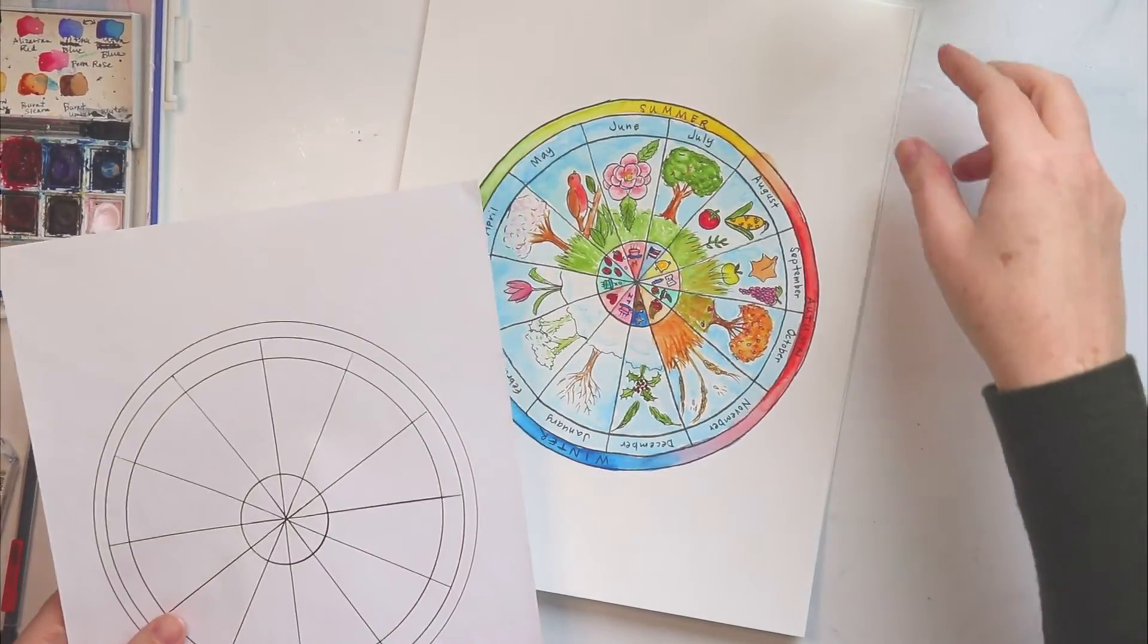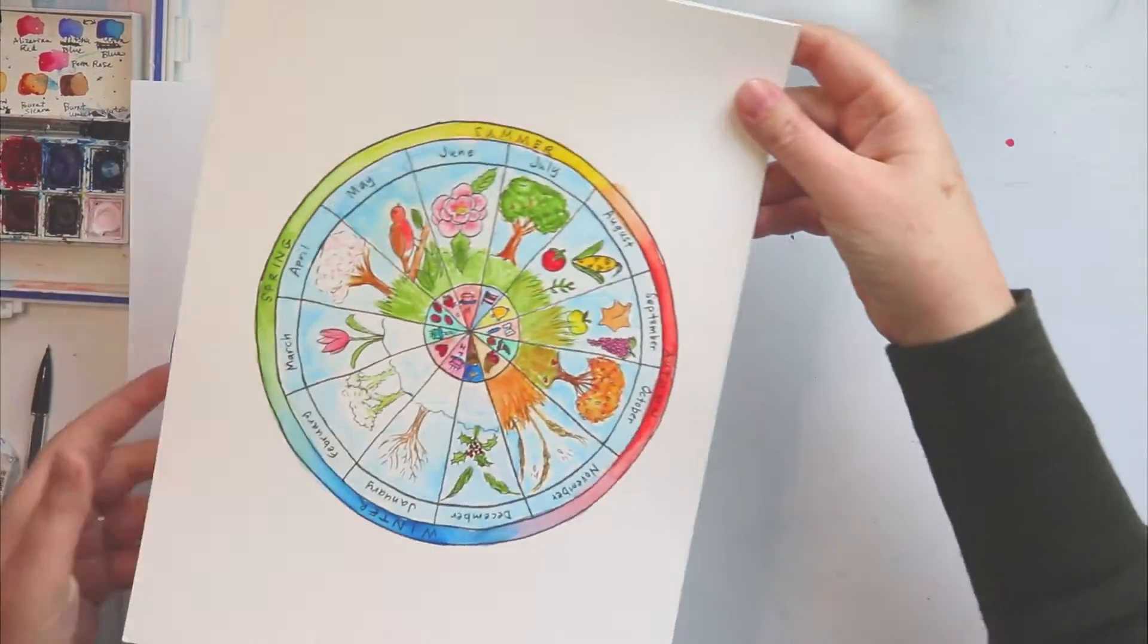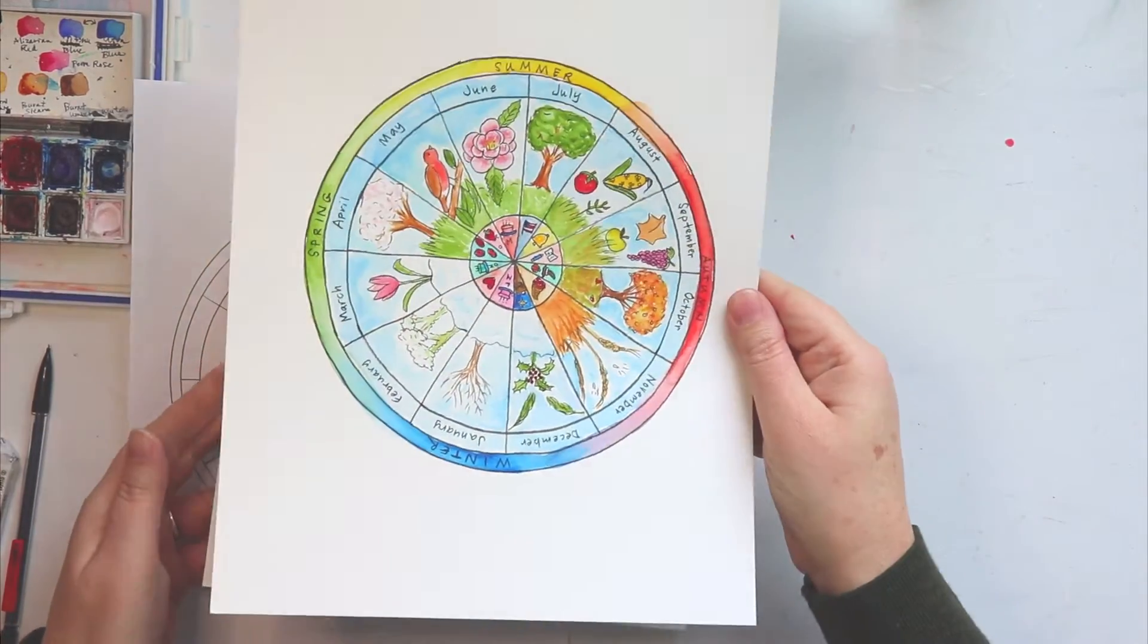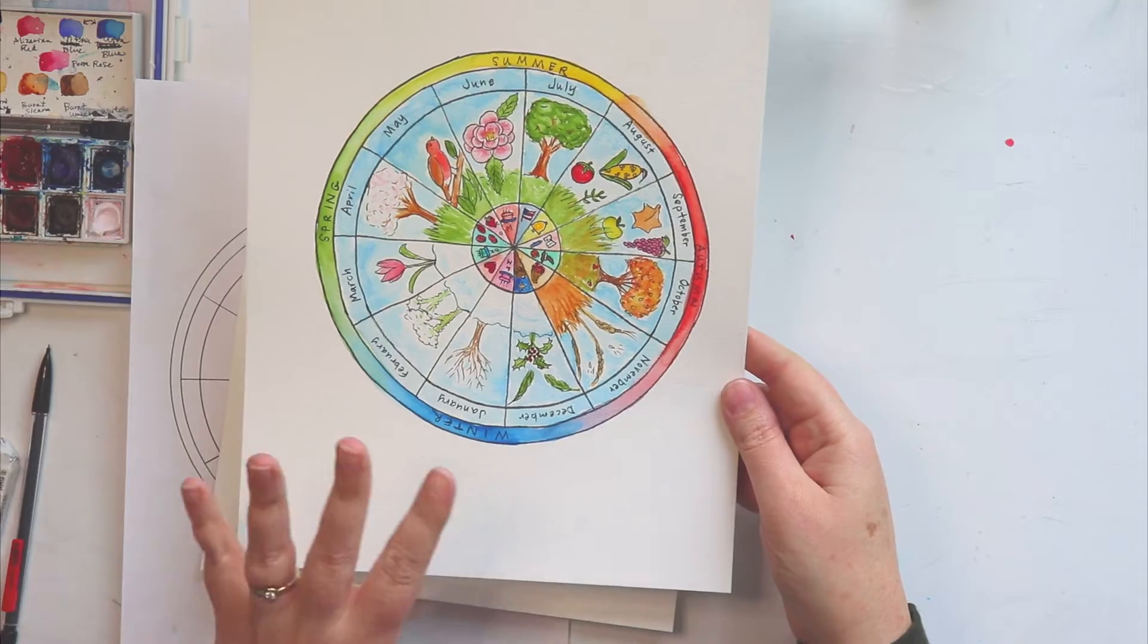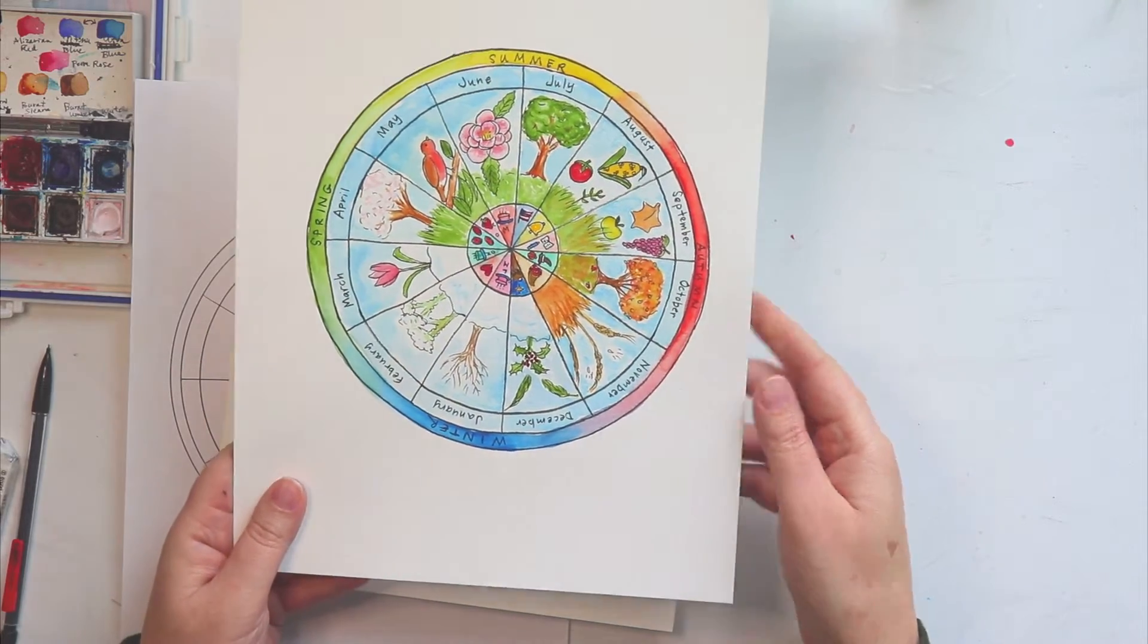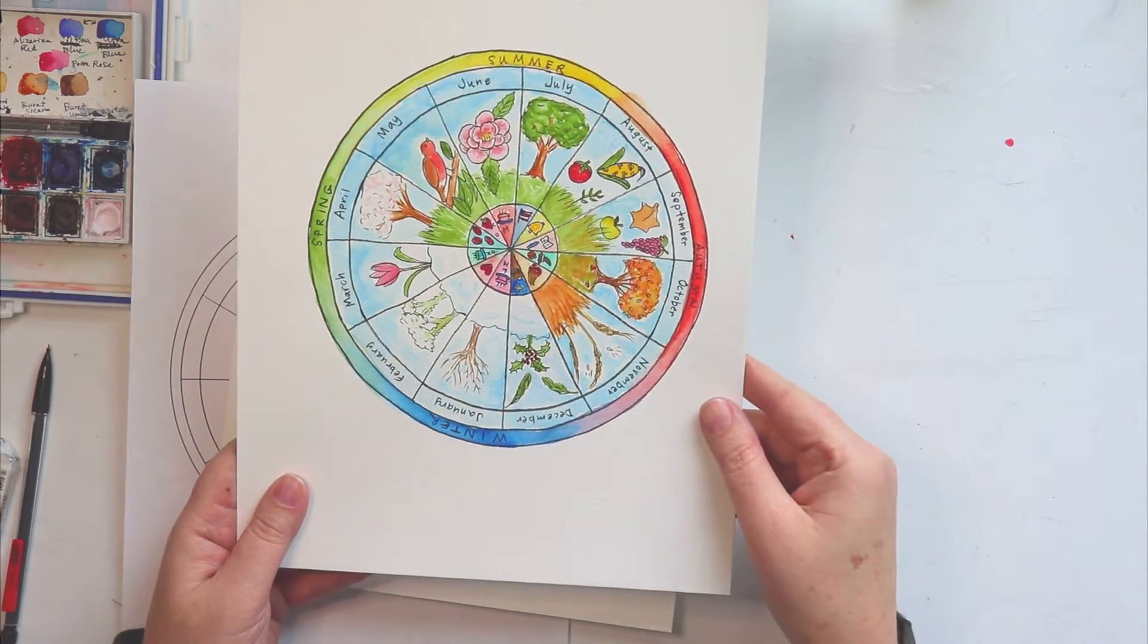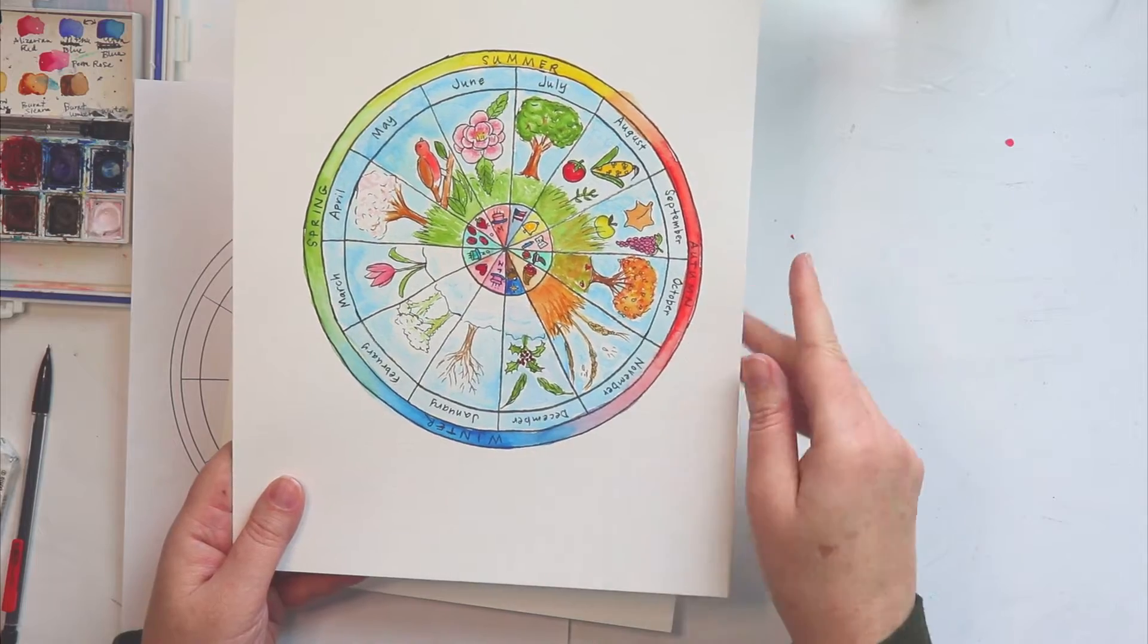Hello, today we are going to learn how to do what is called a phenology wheel. This is an example of a finished phenology wheel. I'm just going to walk you through how you can get started. It's something that will keep you and your children busy for the whole year and it's really fun to add on to.